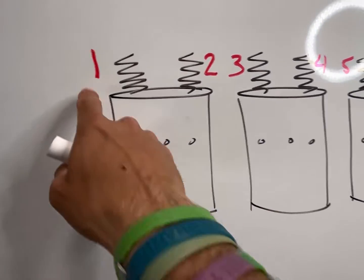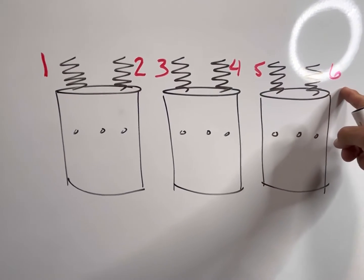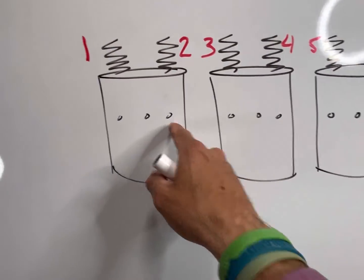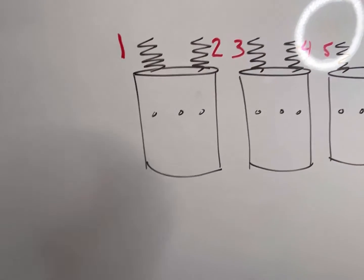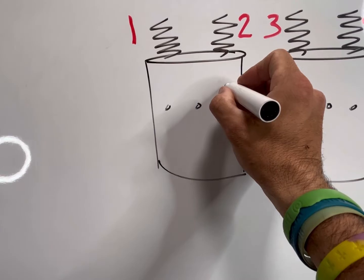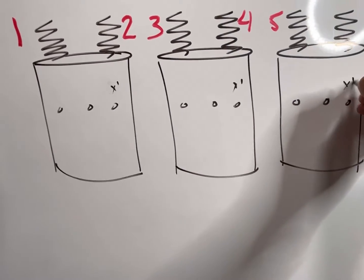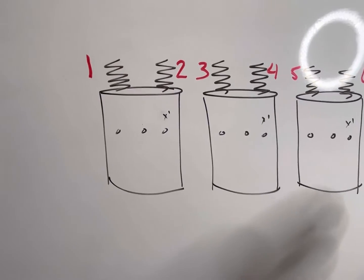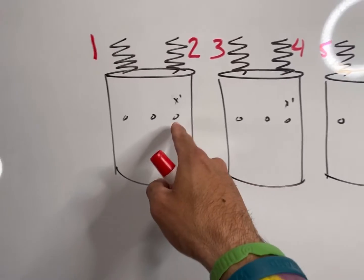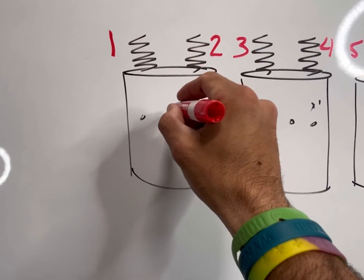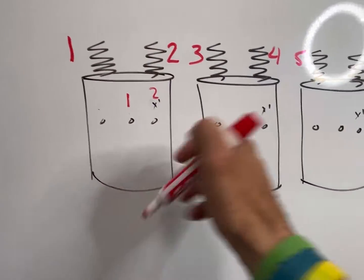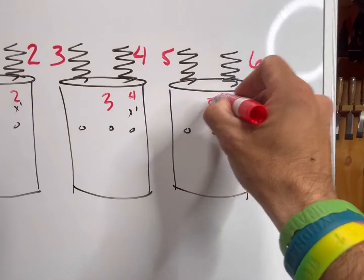For this transformer bank I have my primary numbered out 1 through 6 across. On the secondary side, these transformers require 2400 volts, which is below the 8660V requirement to make them subtractive — so these are additive transformers, which means X1 is on the right side of each transformer. When I number my bank out, I always go left to right: 1, 2, 3, 4, 5, 6. But since these transformers are in parallel and I'm using my X1 and X2 bushing, my number 1 is actually where the X2 bushing is — so 1, 2, 3, 4, 5, and 6.